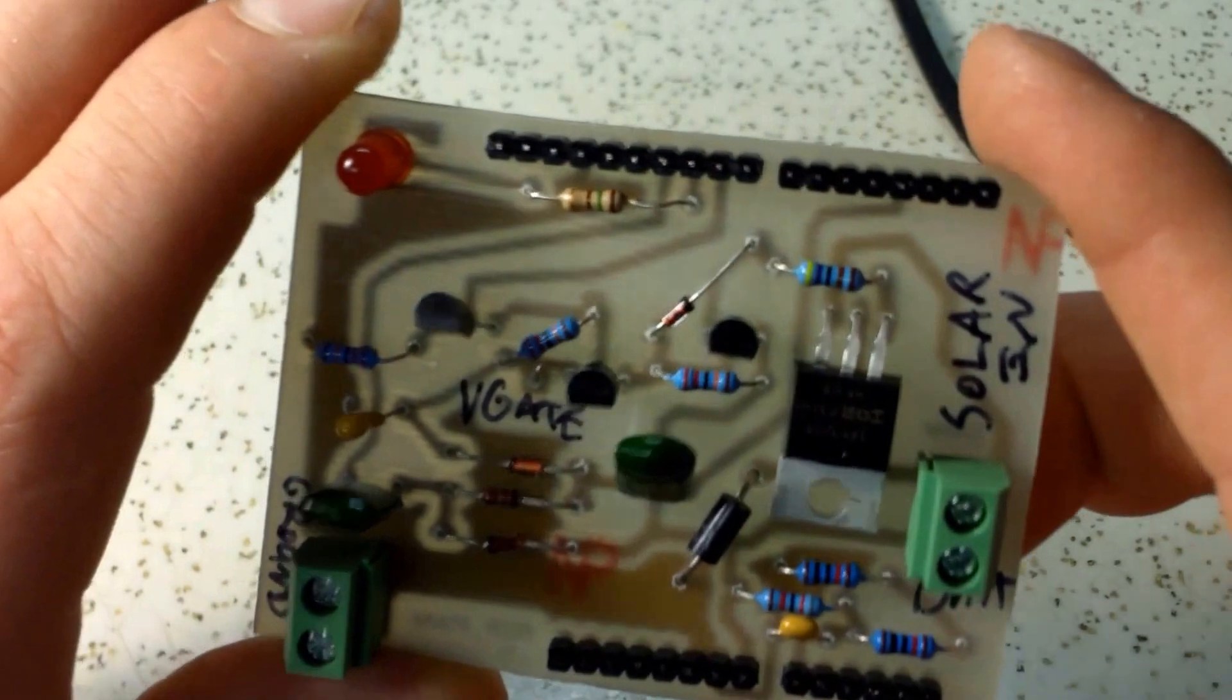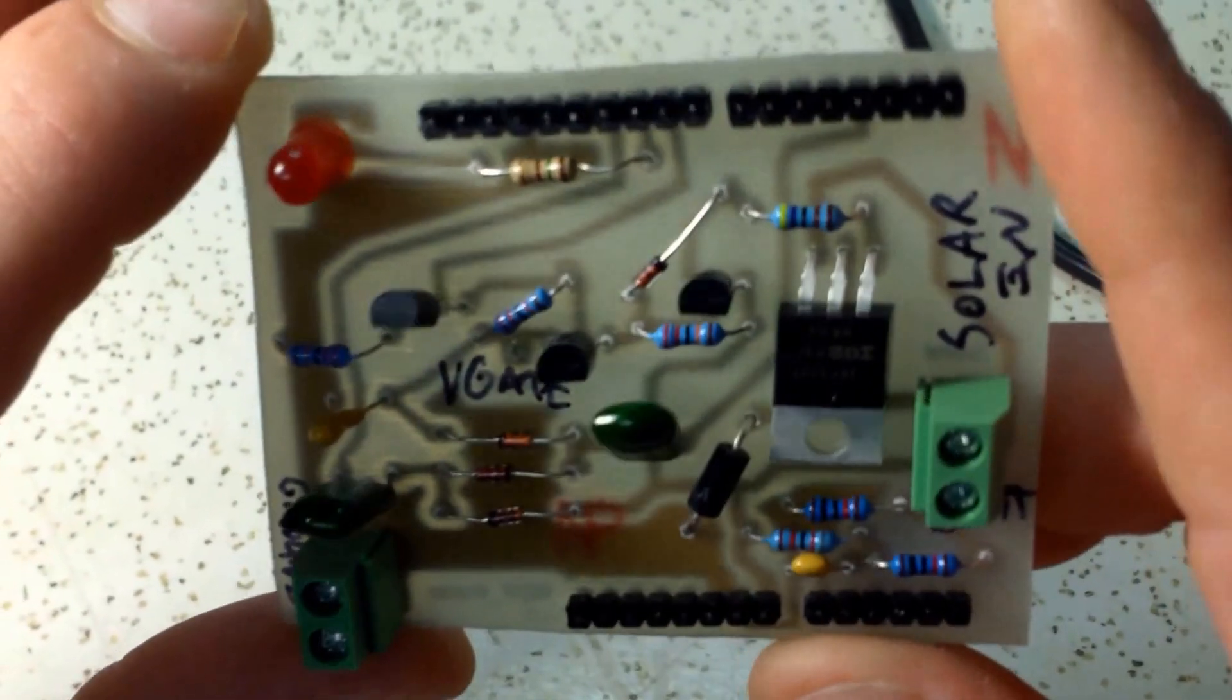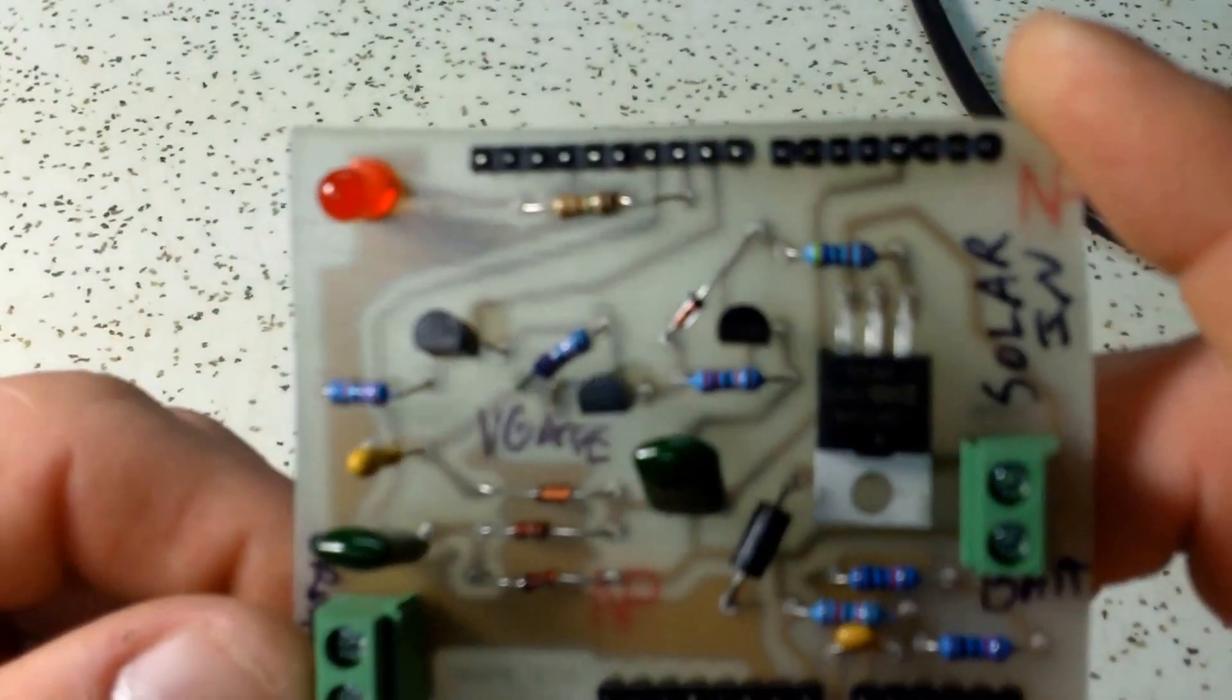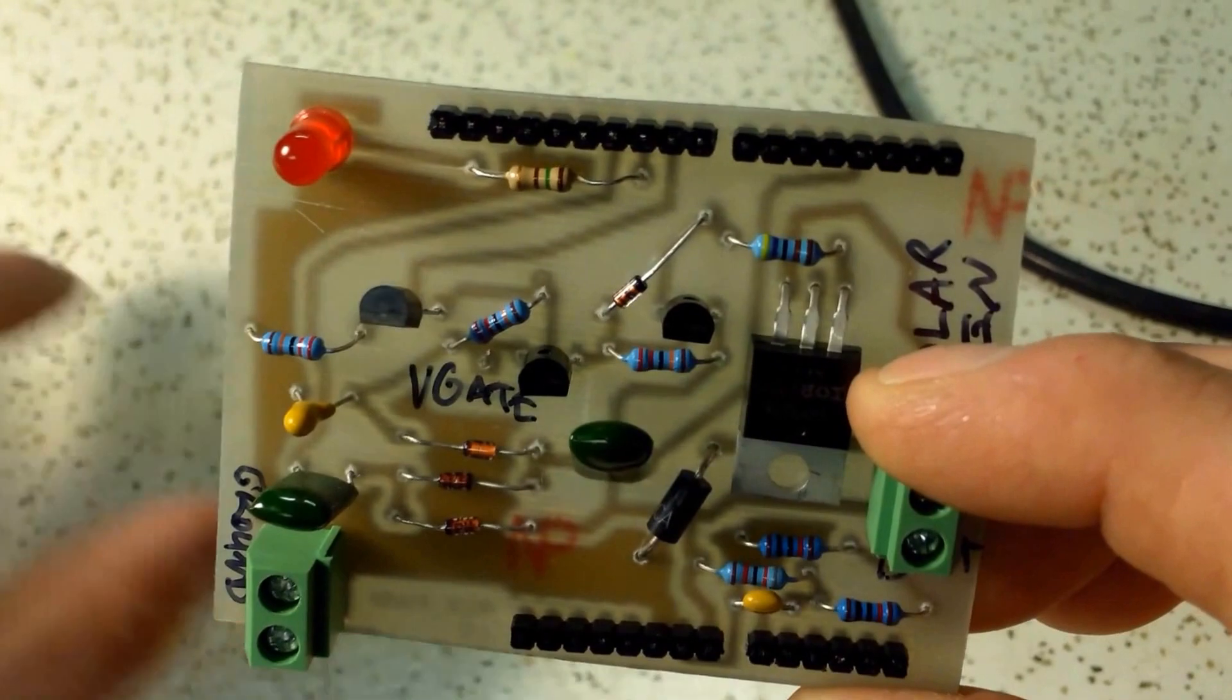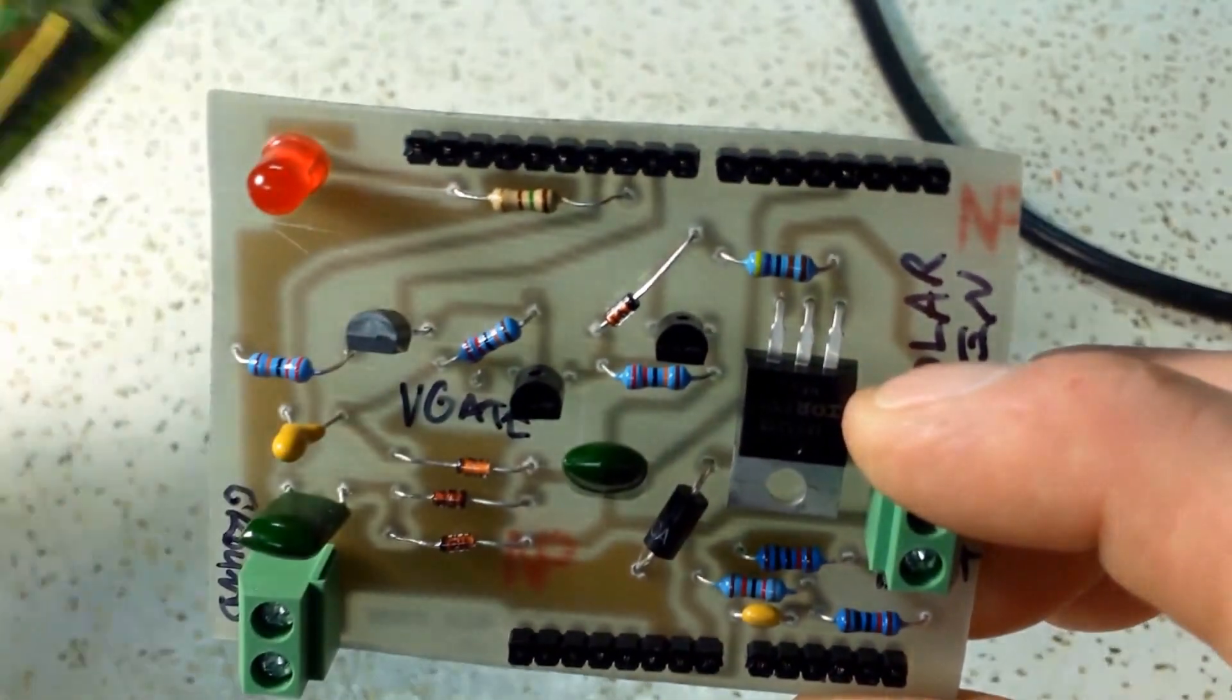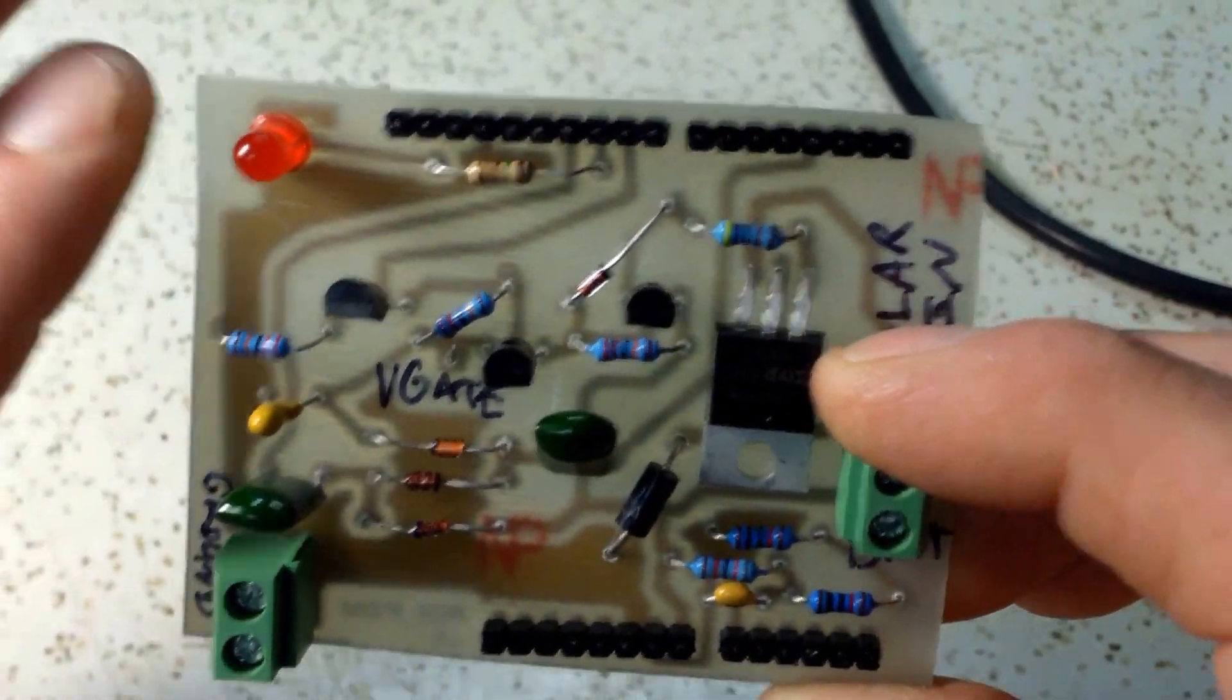So, there is no 5-volt regulation on this board, like there is in Julian's original design, because the Arduino has it. The other thing is, another design requirement I had, is I wanted to be able to make it where you can literally plug and play. So if you didn't want to make your own Arduino board, you could buy a simple Arduino from anywhere, and then plug this right into it, and you're ready to go.